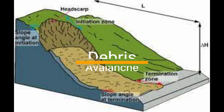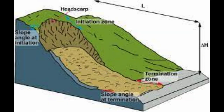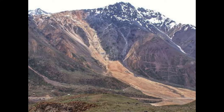Debris avalanche is a type of landslide that involves a rapid and chaotic movement of a mixture of soil, rock, and other debris downhill, often over a long distance. It can be triggered by various factors, including seismic activity, heavy rainfall, or volcanic eruptions. Debris avalanches can be particularly dangerous as they can move at extremely high speeds, reaching up to hundreds of kilometers per hour, and can travel over long distances. They can cause significant damage to infrastructure and property and pose a serious threat to human life.